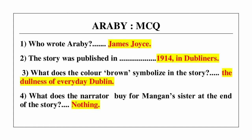Question number 4: what does the narrator buy for Mangan's sister at the end of the story? Answer is nothing.